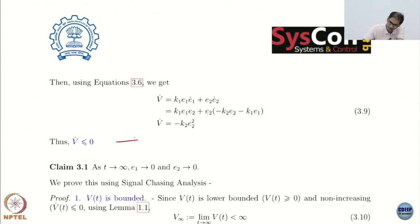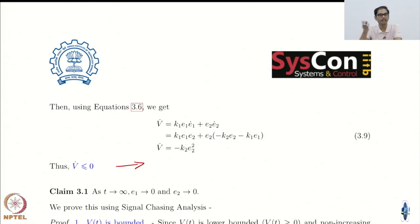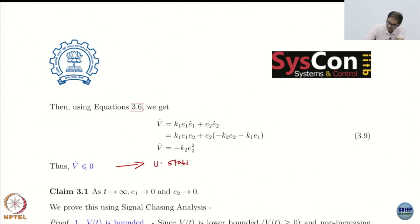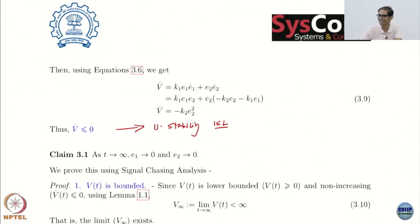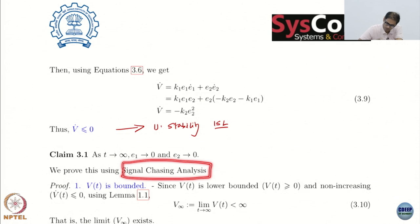From the Lyapunov theorem, since V is positive definite, radially unbounded, and V_dot is negative semi-definite, I can only conclude stability — not asymptotic stability. But I know this system is actually asymptotically stable, even exponentially stable. I want to prove more. You could use LaSalle invariance here since it is an autonomous system, but instead we will use Barbalat's Lemma via what is called signal chasing analysis.